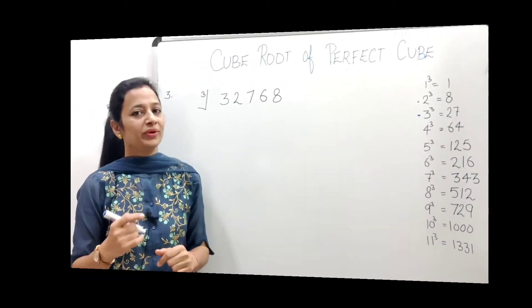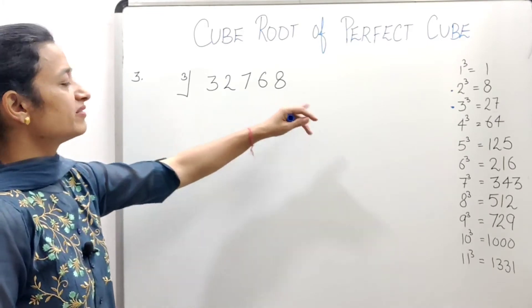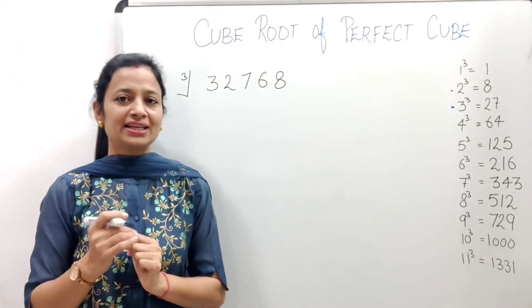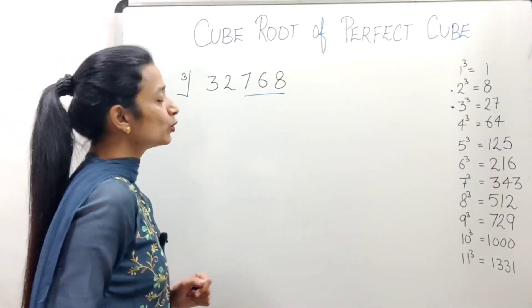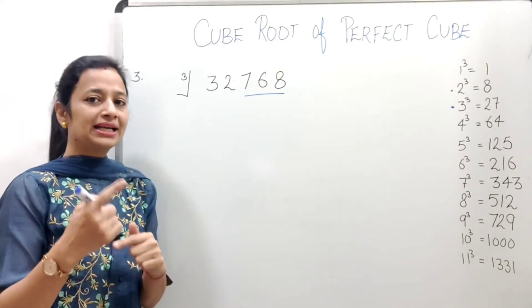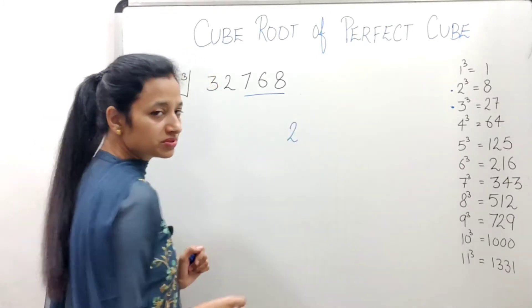Let's take some more examples. Next example is: find out cube root of 327683. Let's see this. So first what will we do? We will do grouping from the right side, 3 digits grouping. And now, at unit place, what is there? 8. And if we cube 8, what number comes at unit place? 2.